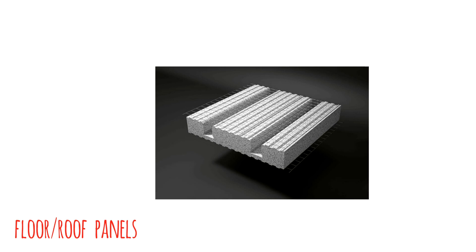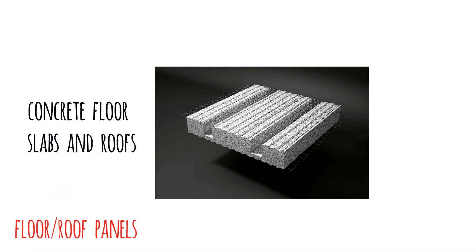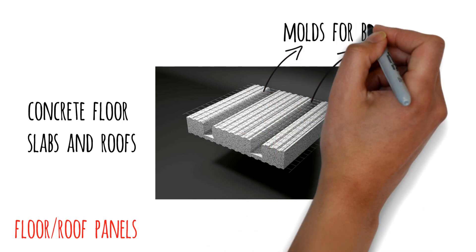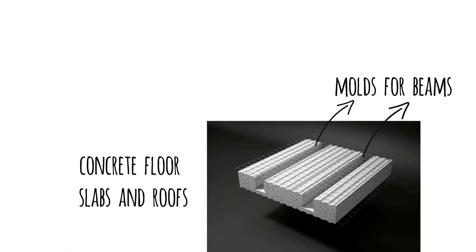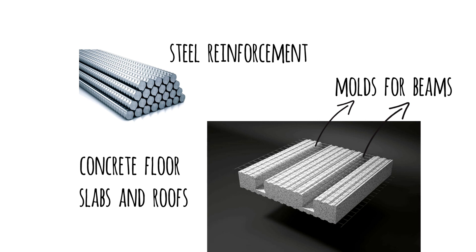The third type of panel is the floor or roof panel. As the name suggests, these are used to make concrete floor slabs and roofs. The cavities in these floor panels are used as molds to make beams, which are reinforced with steel to add structural strength. The concrete is poured on site, and the thickness can be varied according to the span of the slab and the project requirements.